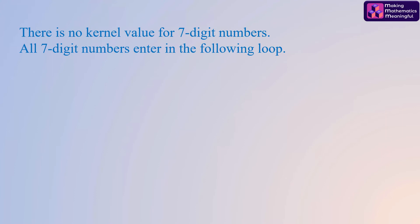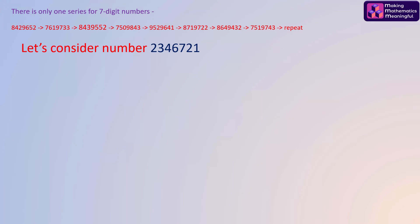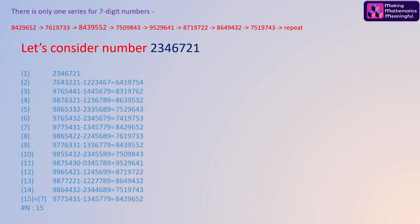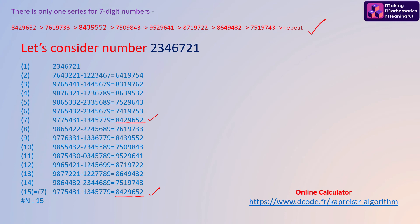As mentioned, there is no kernel value for seven-digit numbers and they always end up entering a specific loop. For example, let's choose the number 2346721. You can check out the iterative process, and as mentioned, after the 15th step it matches with the 7th step: 8429652 — so it enters the loop there, which matches the given series. An online calculator is available which you may use to verify all the results.